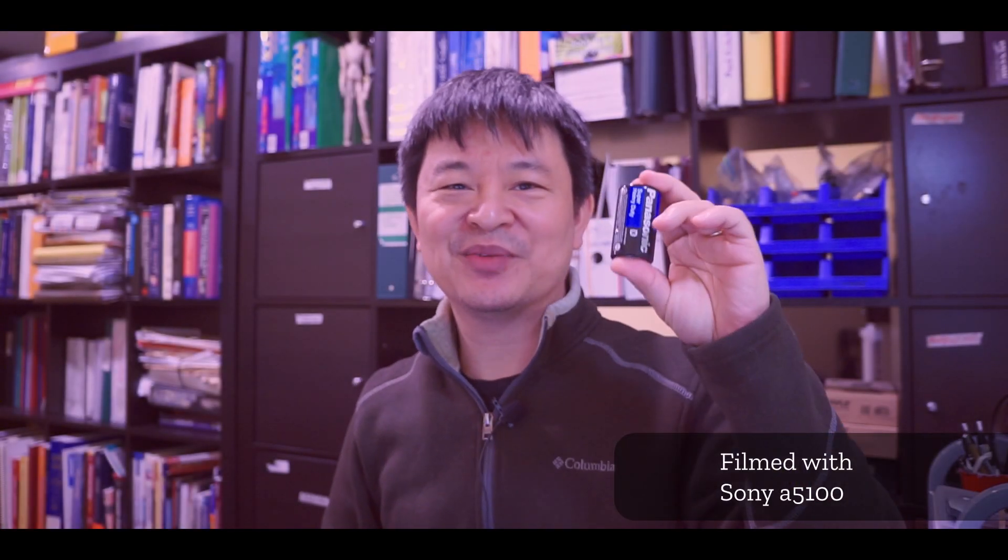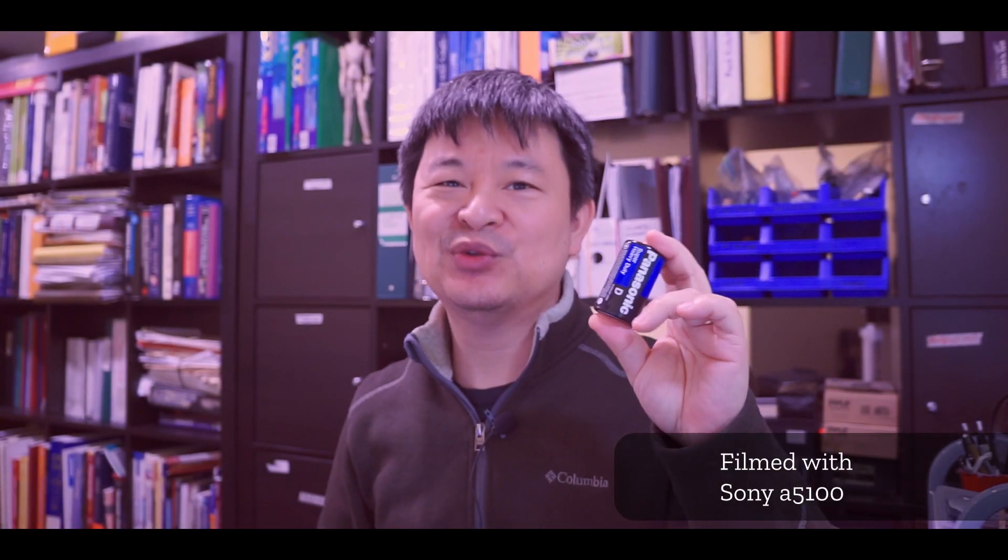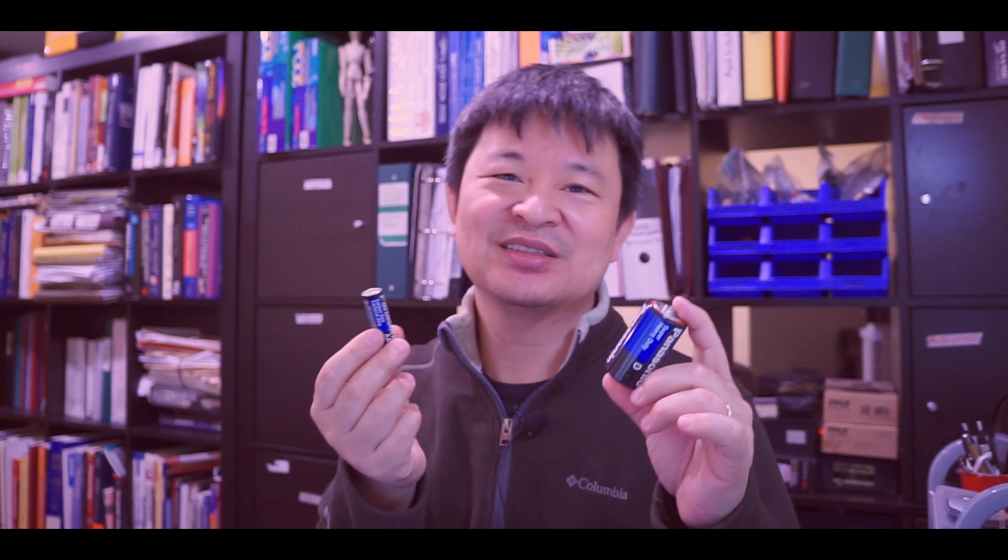Hi, today I want to talk about carbon zinc batteries. They're quite useful and cheap. Once you use them up for LED lights or other electronic devices that require AA or D batteries, you can still reuse or repurpose them for other things. When you take it apart, there are four components that are quite useful.